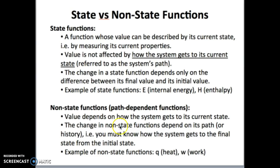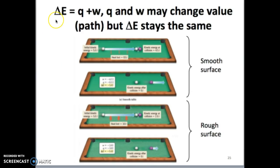A non-state function, on the other hand, would be like heat and work. These two values would change depending on the path that the reaction takes. So to summarize: Q and W are path dependent functions, or non-state functions. However, delta E is a path independent function, or a state function.